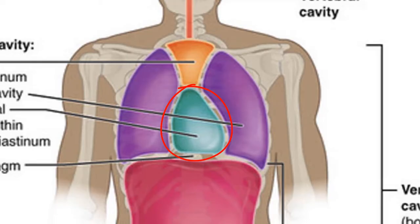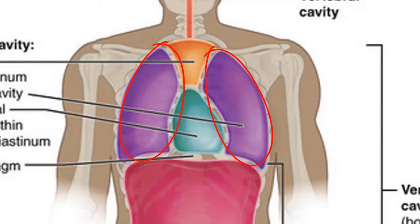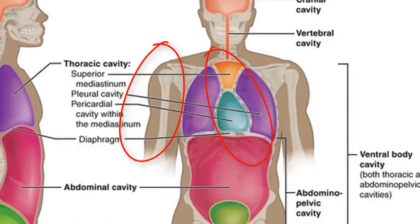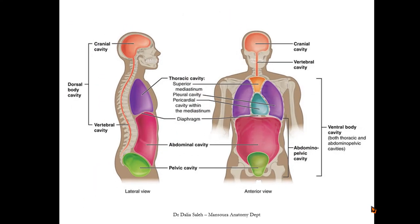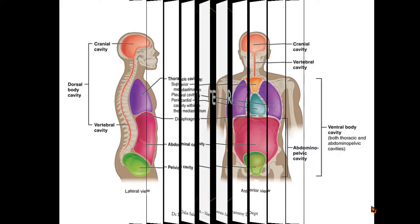which contains the heart and its surrounding membrane, and the two pleural cavities on each side, each containing the lung and its surrounding membrane. Below the diaphragm lies the abdominopelvic cavity, and the abdominal and pelvic parts are not separated from each other.